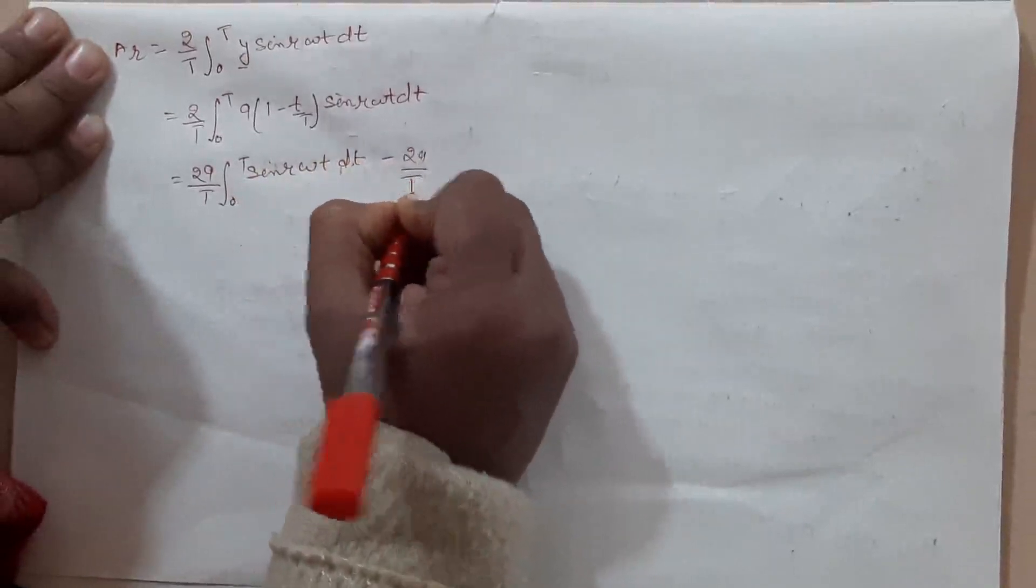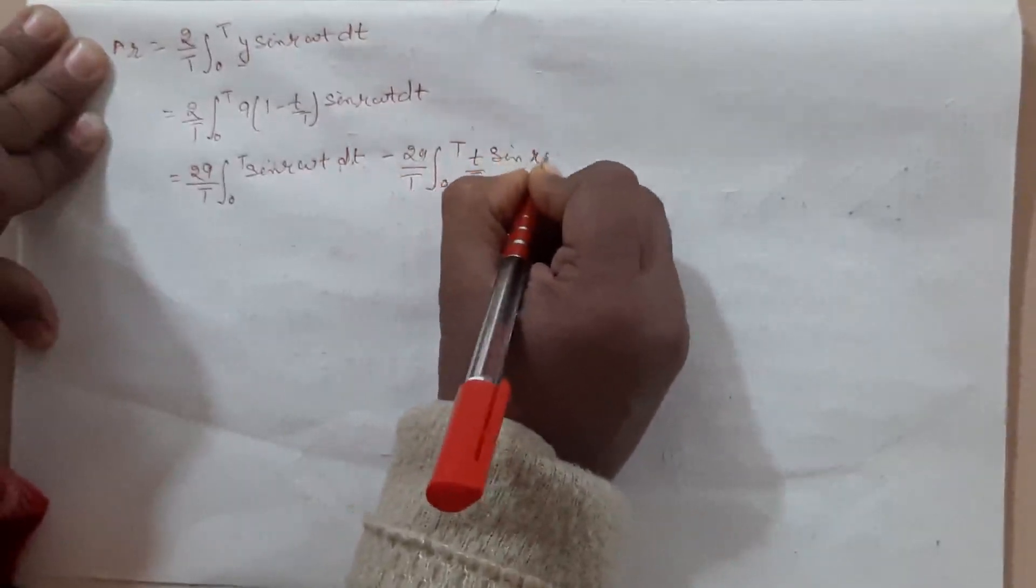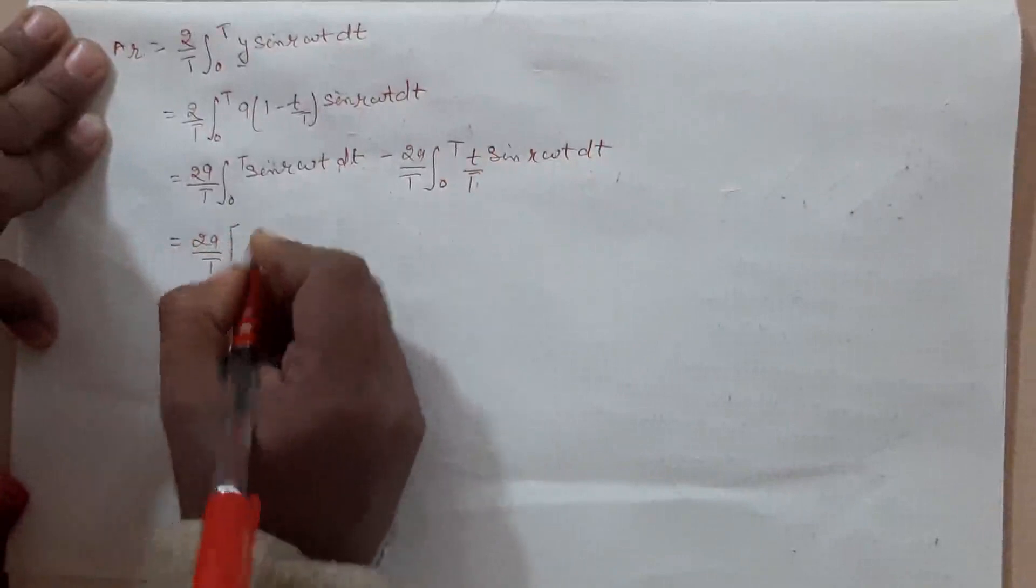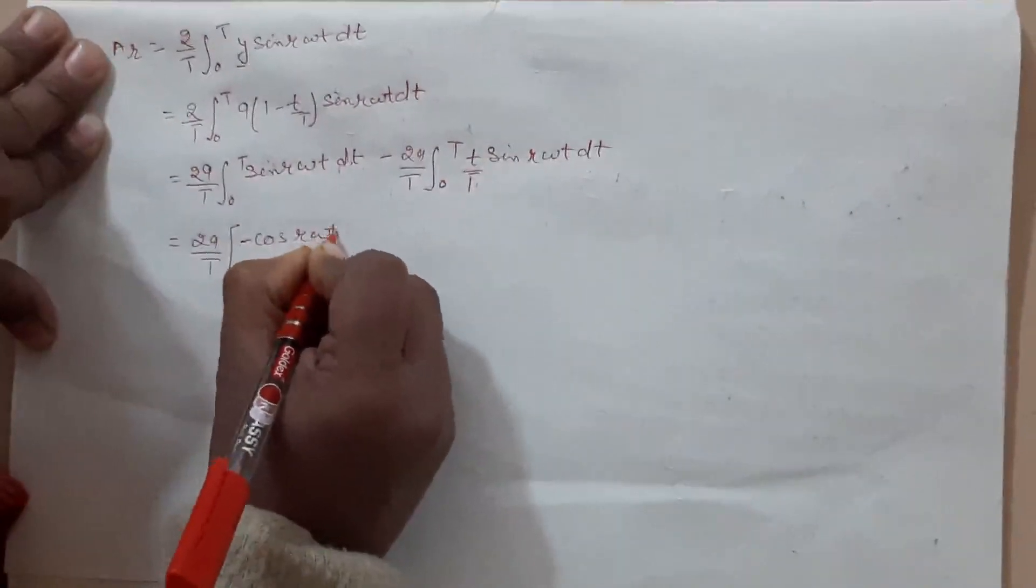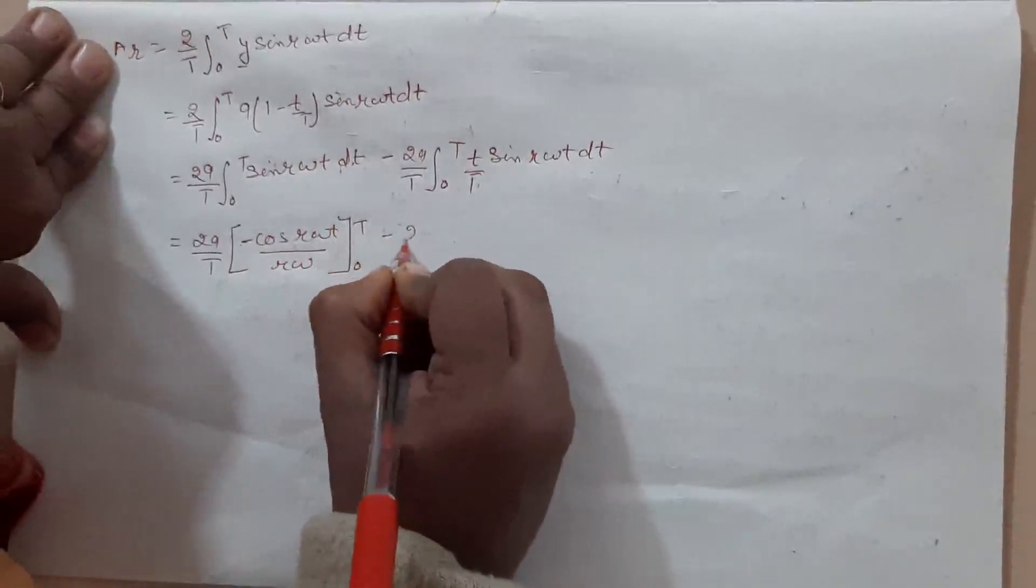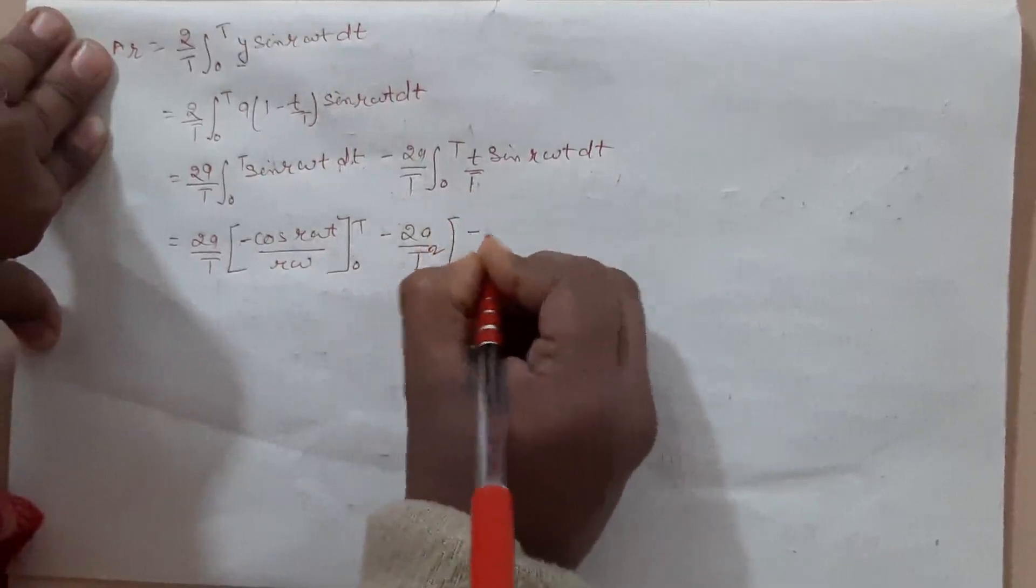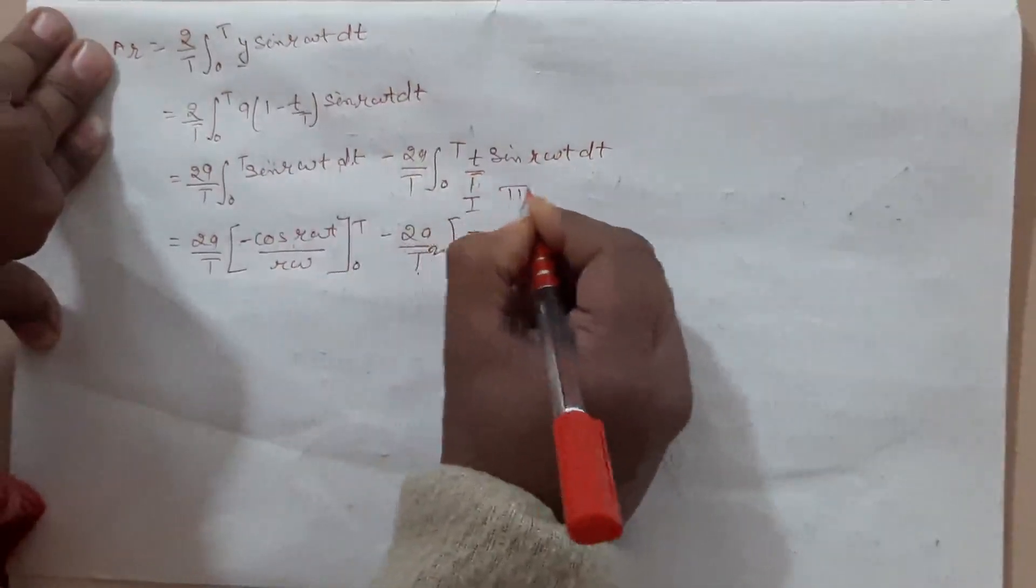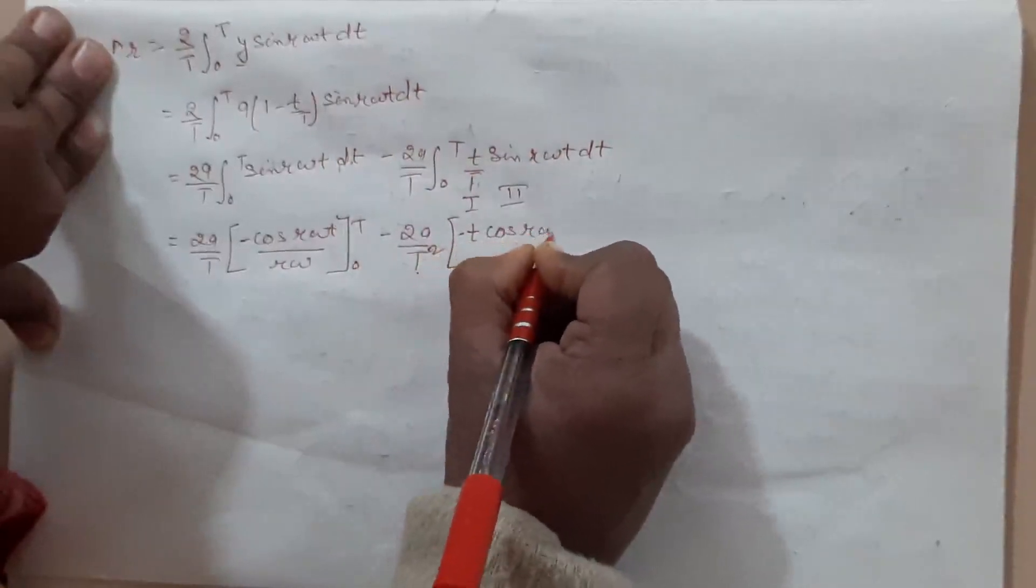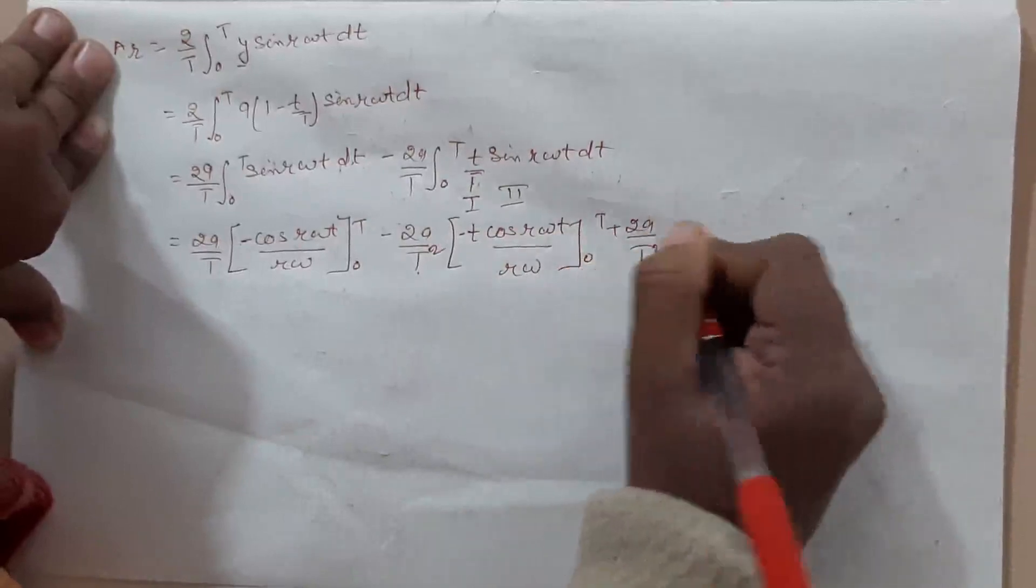Actually the value equals minus cos r omega t upon r omega t minus 2a by t square. Now first we will use this for first term and for the second term, then u equals to minus t cos r omega t upon r omega, then 2a by t square.